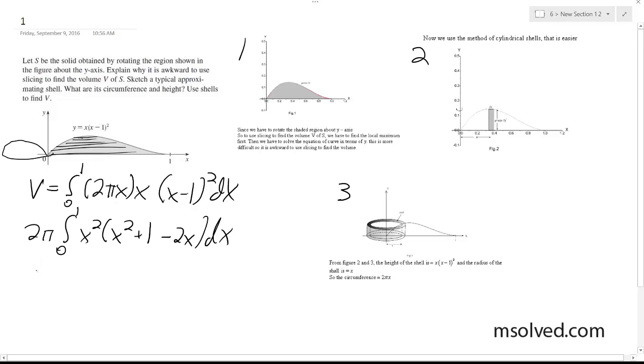After we integrate this, we're going to have 2π times [x⁵/5 + x³/3 - x⁴/2] evaluated from 0 to 1.